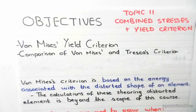The objectives of this video are the explanation of the second of the two yield criterion for combined shear stresses and normal stresses. This is known as von Mises yield criterion, and then a brief comparison of von Mises and Tresca's criterion.